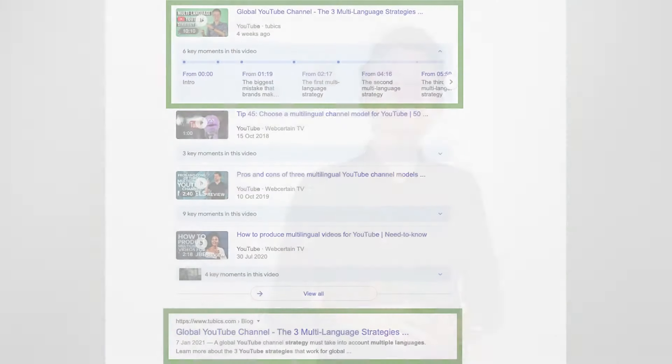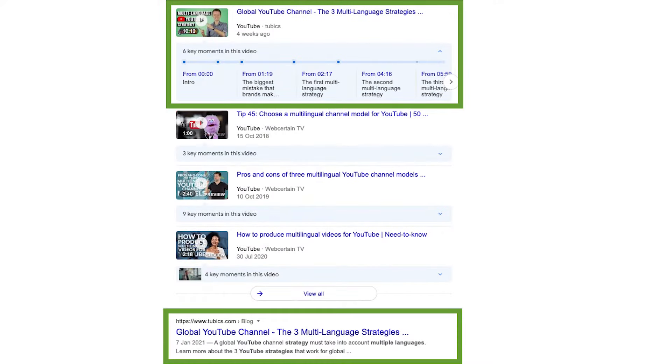Do you want to know what we did to rank twice on Google with a YouTube video and a blog post? The answer is schema markups. What is this and how can you implement it? We will talk about it in this video.